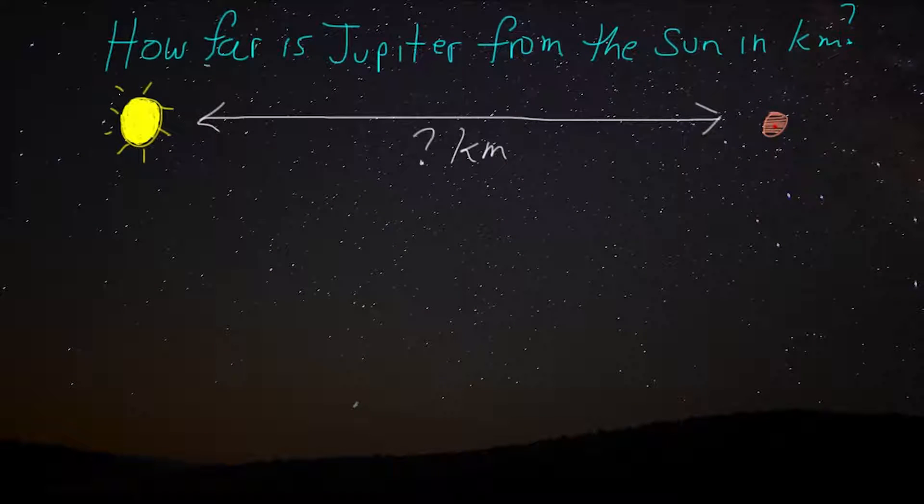Okay, in this example, we're going to figure out how far Jupiter is from the Sun in kilometers. And what this is going to lead us to is, for the first time, make a conversion from one unit of measurement into another.